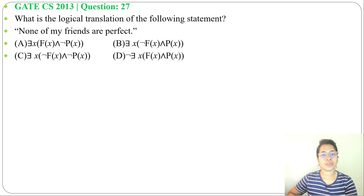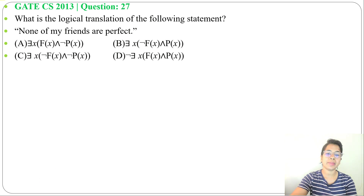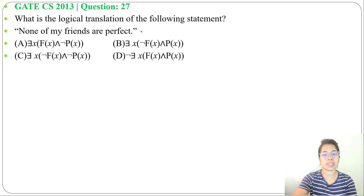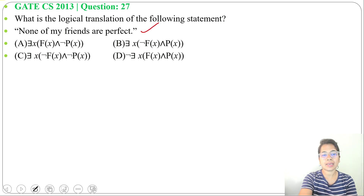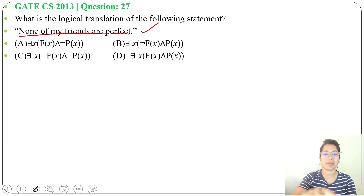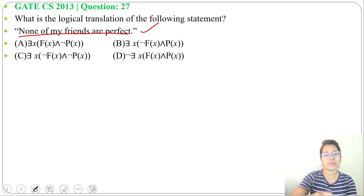We can solve in two ways. First, we can find the meaning of every option and match with this statement. Second, we can directly find a formula for this and match with the option. Let me first write the meaning of every option.